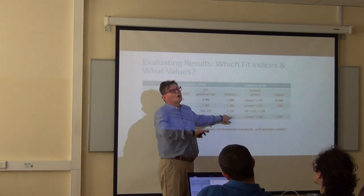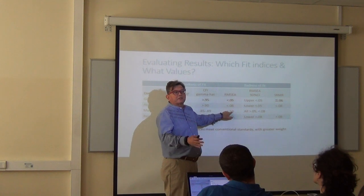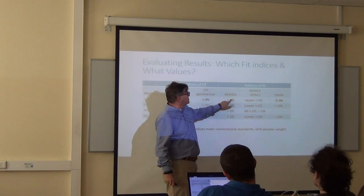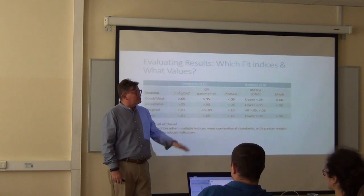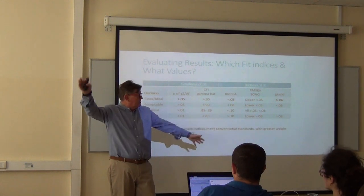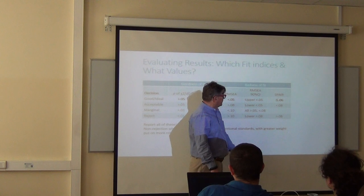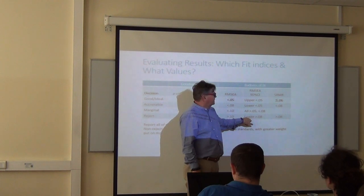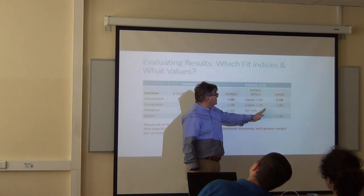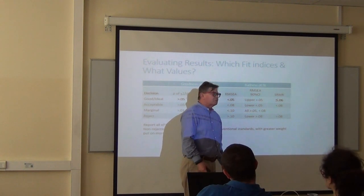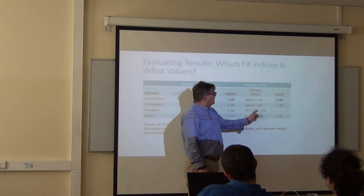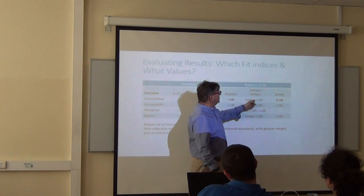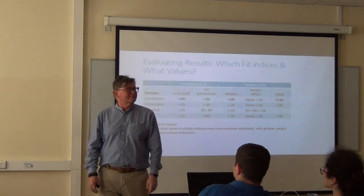For RMSEA: over 0.10, no one's going to publish it; up to 0.10, you could probably get it in a book chapter; under 0.08, you'll probably get published; and under 0.05, you probably just walked on water, especially if your model was complicated. For the confidence interval: if the lower end is over 0.08, you're probably never going to get published. If you can get the lower end under 0.05, people say okay, we can live with that. If you can get the upper end under 0.05, they're very happy.